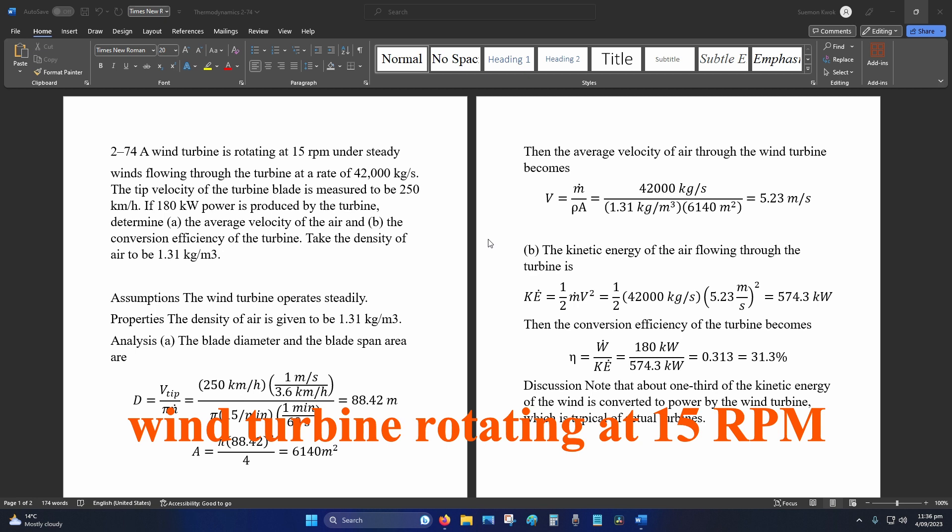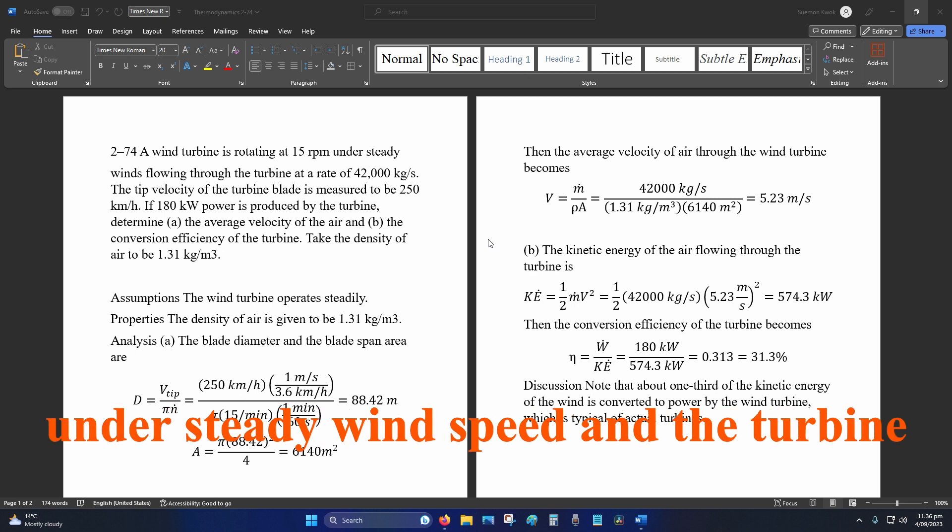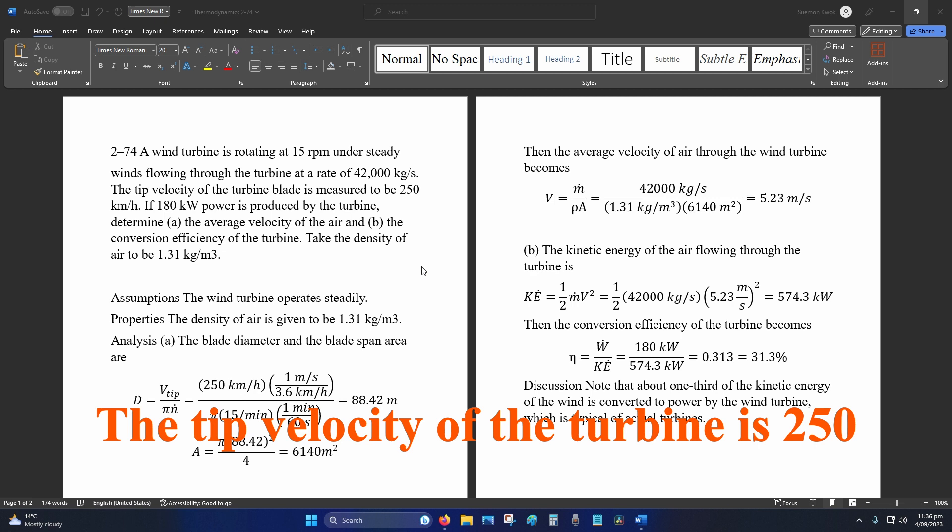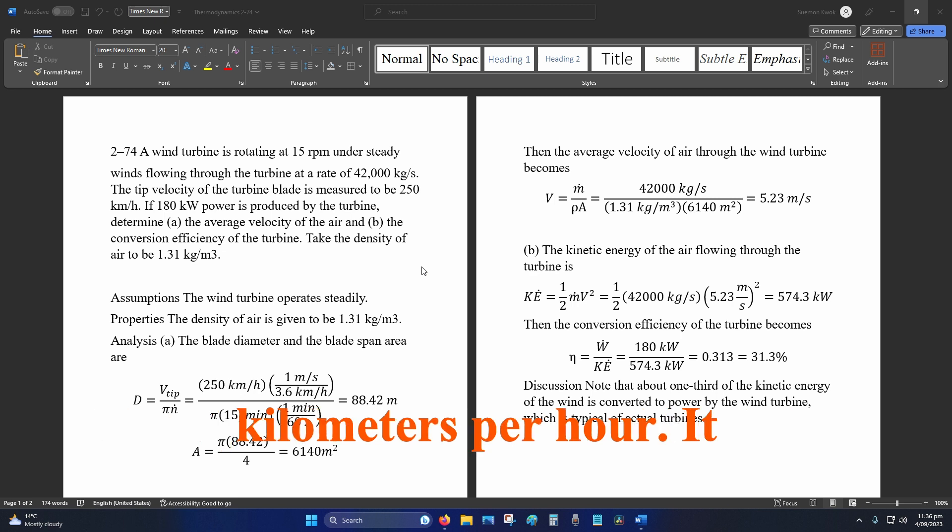We have a wind turbine rotating at 15 RPM under steady wind speed. The turbine has a mass flow rate of 42,000 kilograms per second. The tip velocity is 250 kilometers per hour, and it generates 180 kilowatts power.